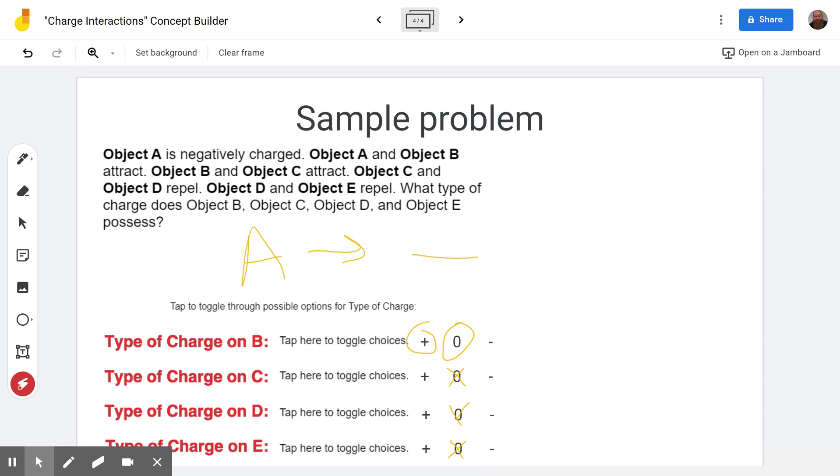Let's first take a look at a positive B. So if B is positive, then we see that B and C attract. We already know that C can't be neutral. So if B and C attract, well if B is positive, then that means C could be negative. So that's the only option if B is positive.